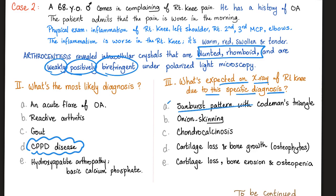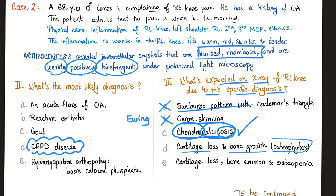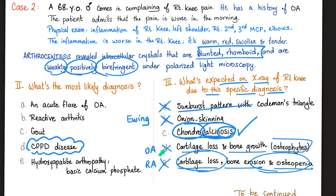Sunburst pattern? No — that's osteogenic sarcoma. Onion skinning? No — that's Ewing sarcoma. The correct answer is chondrocalcinosis. Chondro is cartilage, calcinosis is calcium, and -osis is condition — so this is a condition of calcium in your cartilage. Cartilage loss and bone growth (osteophytes) is osteoarthritis. Cartilage loss with bone erosions and osteopenia is rheumatoid arthritis, because the antibodies cause bone loss.